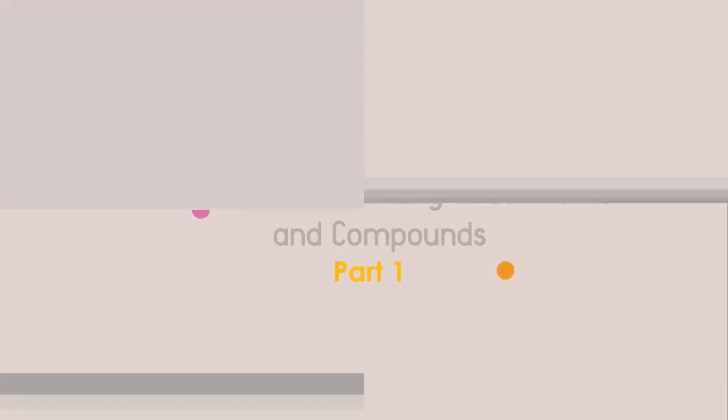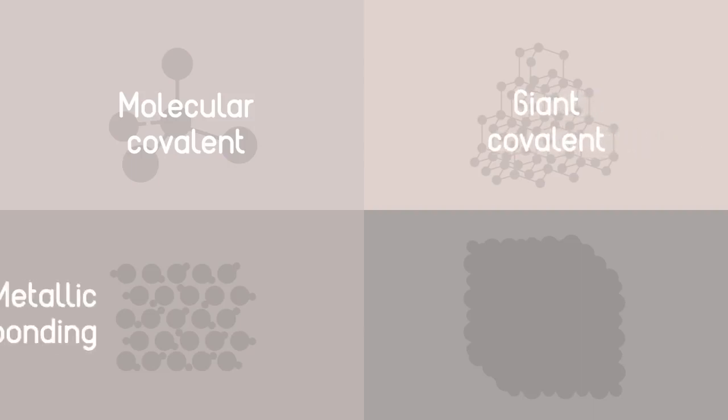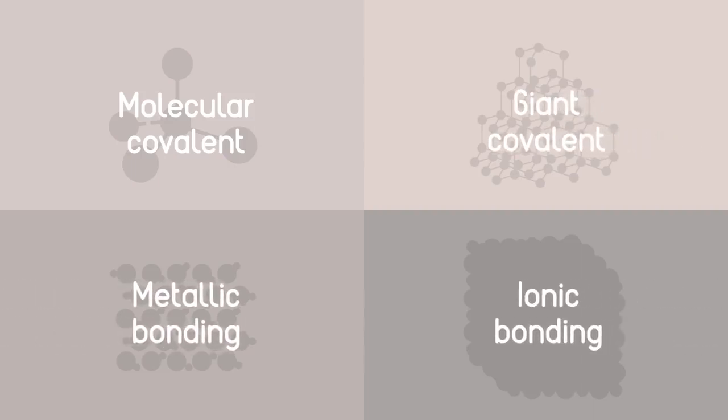This two-part video explains why there are only four possible structures that form when elements bond: molecular covalent, giant covalent, metallic, and ionic bonding.